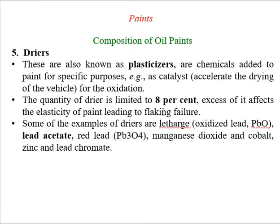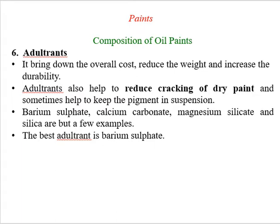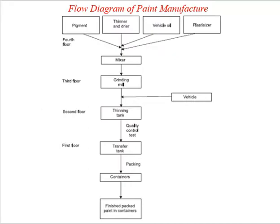Commonly used solvents include turpentine. The next component is the dryer, also known as plasticizer. It is added to oil paints to make them dry faster, with a maximum limit of 8 percent. Examples include litharge, lead acetate, and red lead. The next component is adulterants, which help in reducing the cracking of dry paint. A best example is barium sulphate.